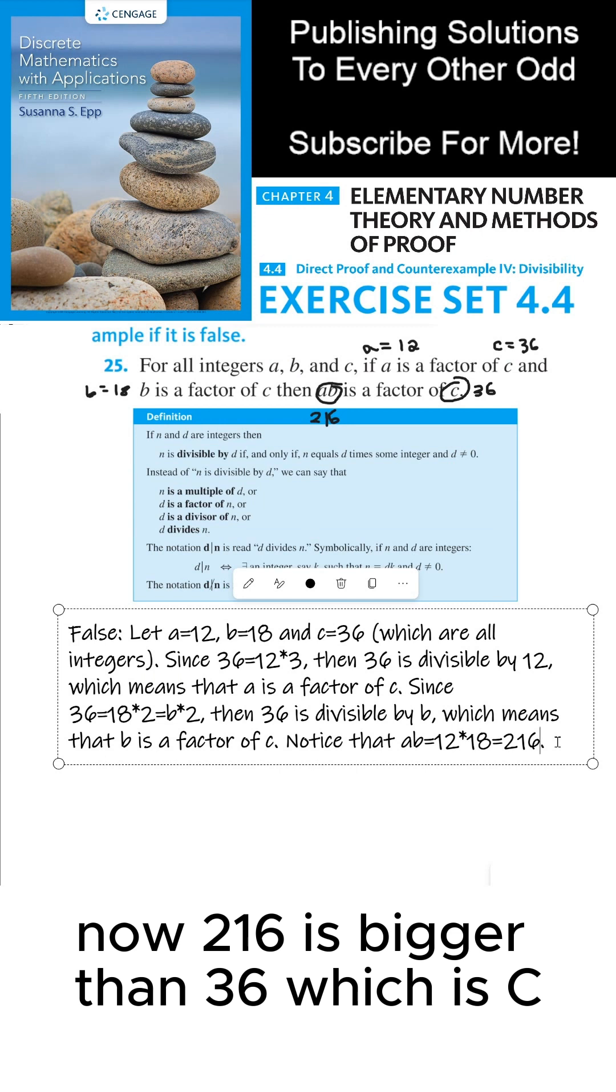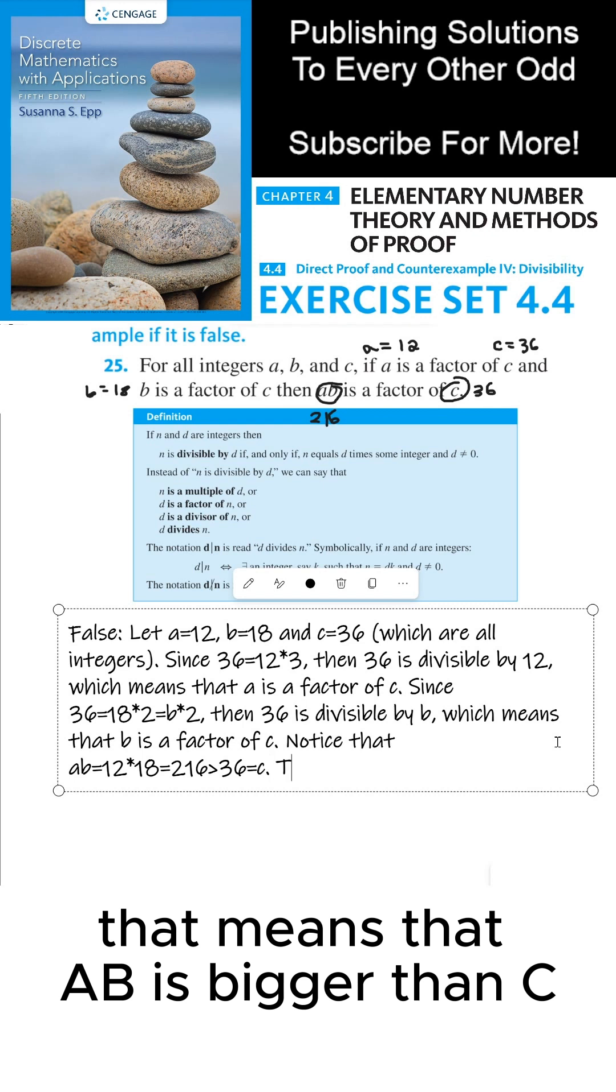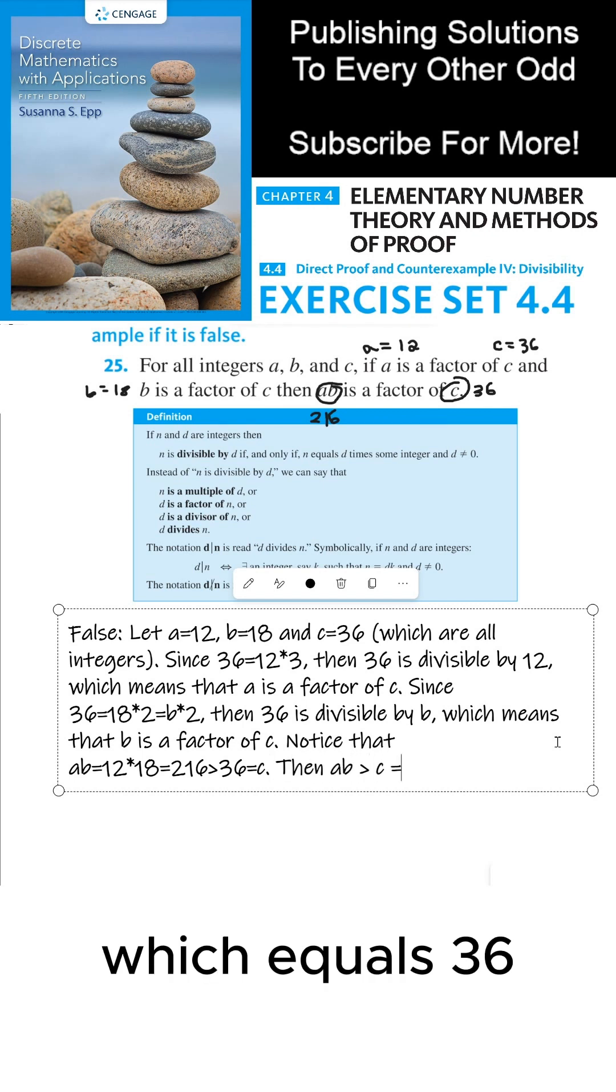Now 216 is bigger than 36, which is c. That means that ab is bigger than c, which equals 36.